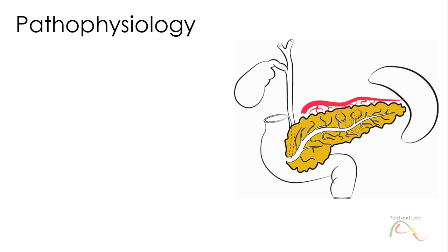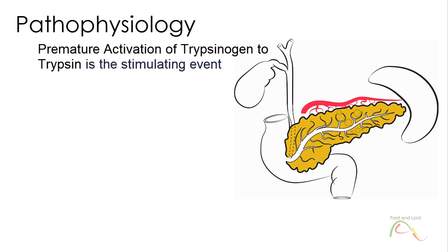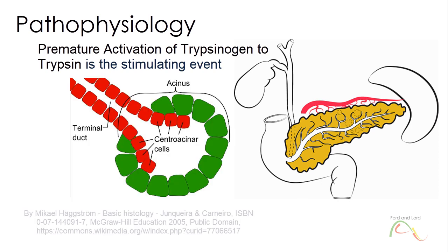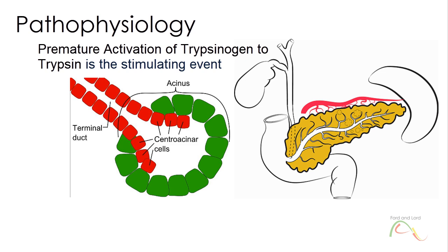The pathophysiology of pancreatitis includes destruction of the pancreatic cells and systematic inflammatory response. Premature activation of trypsinogen to trypsin is the stimulating event. It happens within the acinar cells. Trypsinogen is an inactive substance which is also secreted by the pancreas, from which the digestive enzyme trypsin is formed in the duodenum.